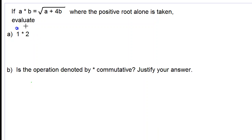So 1 would be a and 2 would be b. We are substituting a equals 1 and b equals 2. So we have the square root of 1 plus 4 times 2, which is 8. This will be the square root of 1 plus 8 is 9. And we are taking the positive root, so the square root of 9 will be positive 3.